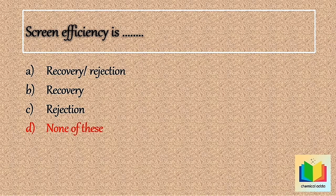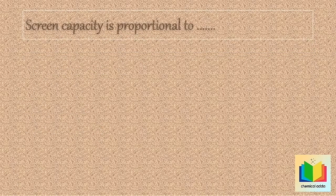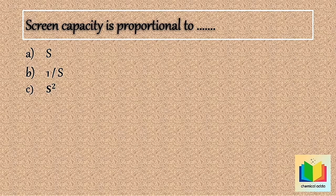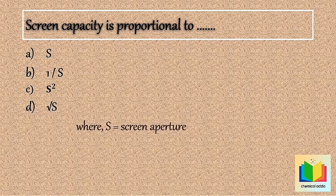Next question: Screen capacity is proportional to — Option A: S. Option B: 1/S. Option C: S squared. Option D: Square root of S. Where S is screen aperture.